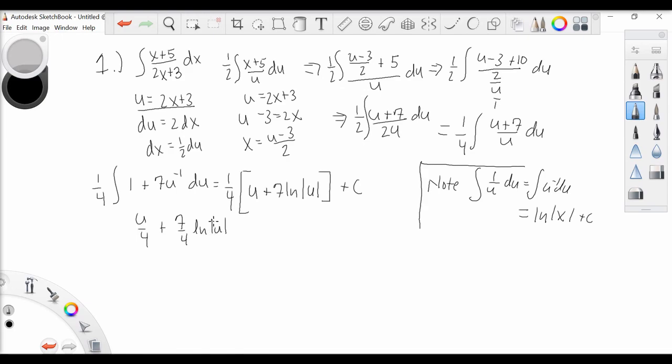Now plugging back in using our u-sub relationship up here, we're going to get 2x plus 3 over 4.